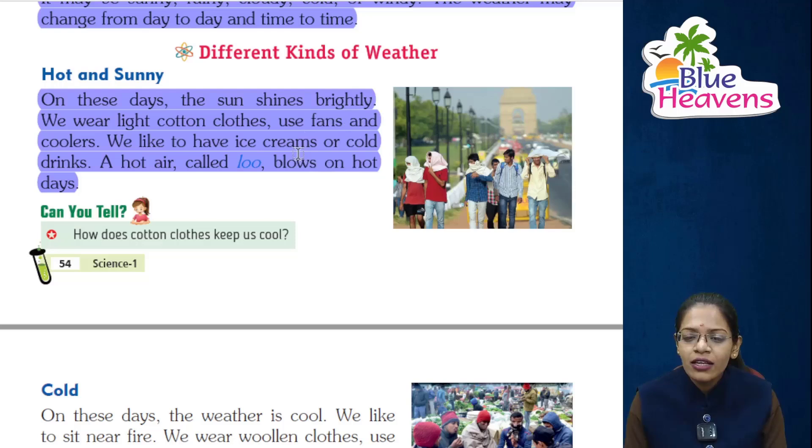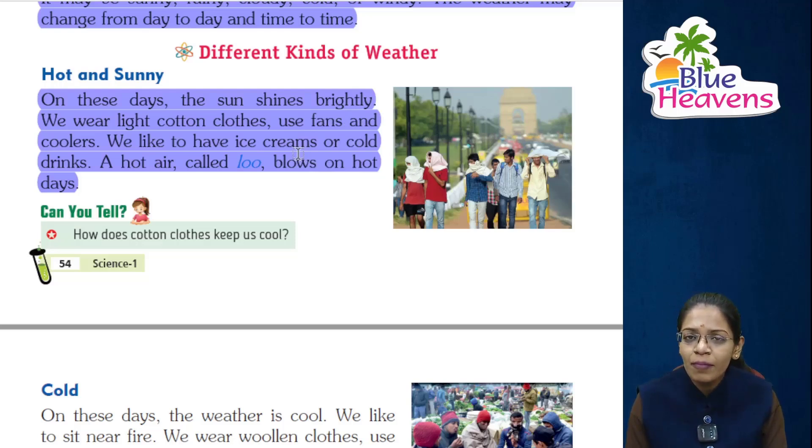In dino kya hota hai baccho — suraj bahut tez chamakta hai. Hum sunny day mein halki cotton clothes ke kapde pahante hain.